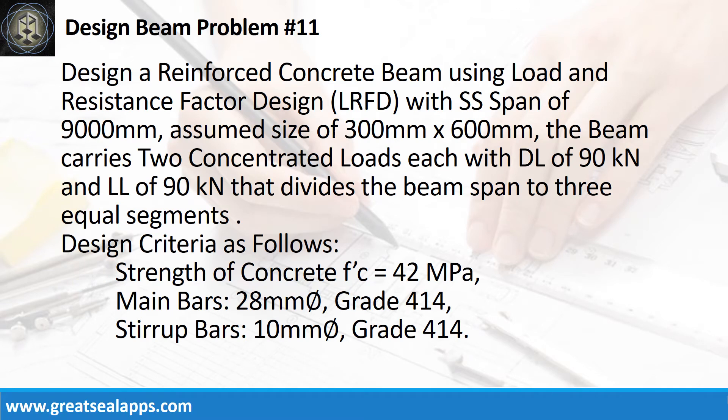Design a reinforced concrete beam using load and resistance factor design with simply supported span of 9,000 mm. Assume size of 300 mm by 600 mm. The beam carries two concentrated loads, each with dead load of 90 kN and live load of 90 kN, that divides the beam span to three equal segments. Design criteria as follows.